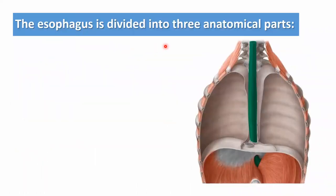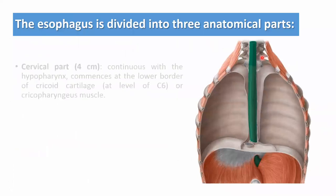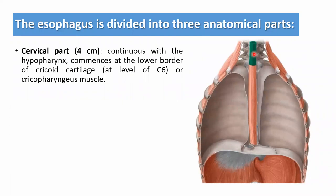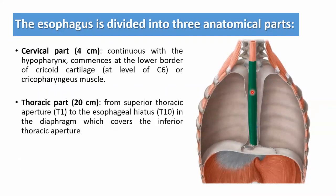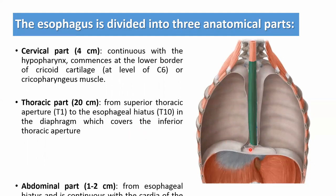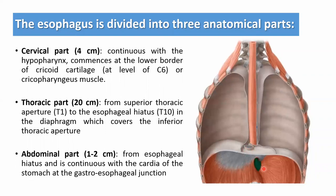The esophagus is divided into three anatomical parts. The cervical part is about 4 cm, continuous with the hypopharynx, commencing at the lower border of the cricoid cartilage at level C6 or the cricopharyngeus muscle. The thoracic part is about 20 cm, from the superior thoracic aperture at T1 to the esophageal hiatus at T10 in the diaphragm. The abdominal part is about 1–2 cm, starting from the esophageal hiatus and continuous with the cardia of the stomach at the gastroesophageal junction.